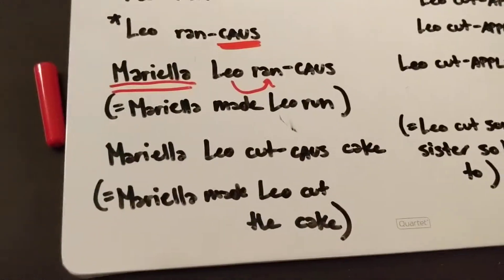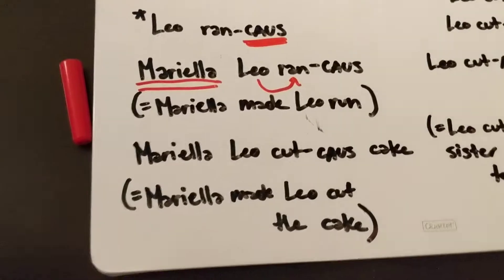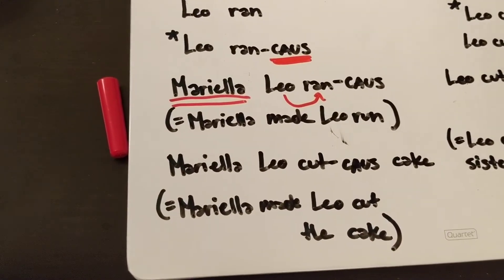Similarly, you can add these causer arguments to transitive verbs. So if Leo's cutting a cake, Mariela can make Leo cut a cake, right? That works fine.